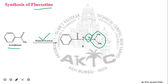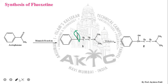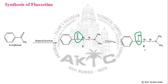Structure 1 then undergoes reduction. A carbonyl group is present in Structure 1, and this ketone is converted into an alcohol by a reducing agent — reduction being the simple addition of hydrogen. This gives Structure 2 containing an OH moiety.